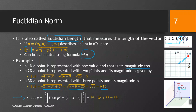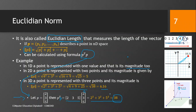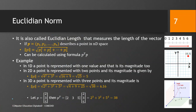From this discussion, you should have the idea of what the Euclidean norm is and how we use it to find the distance of a point in 1D, 2D, 3D, 4D, and even ND.